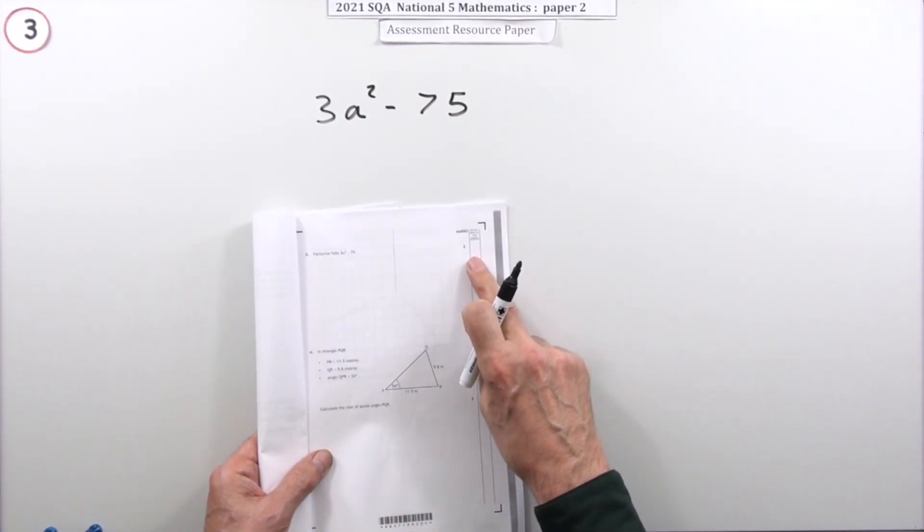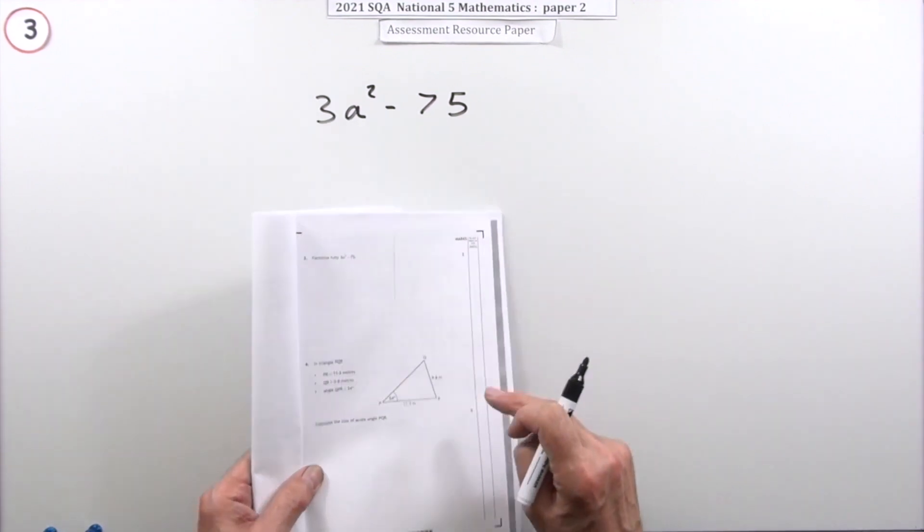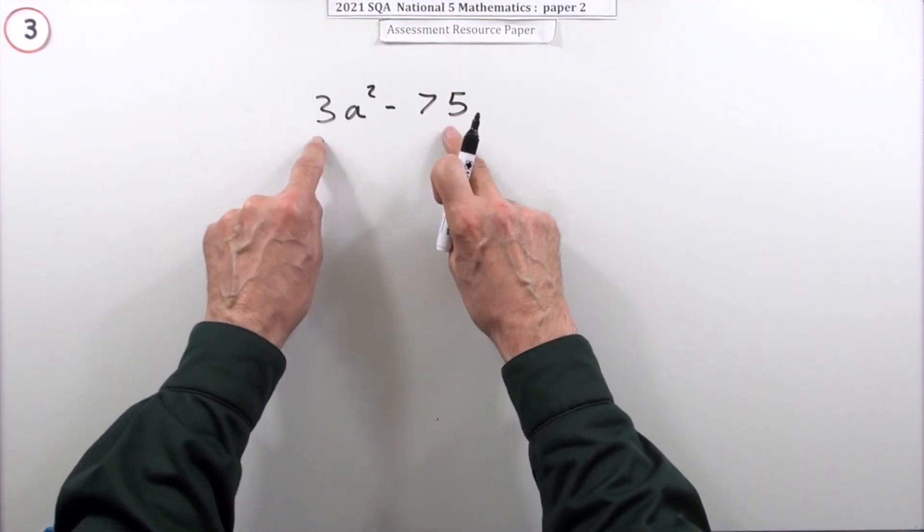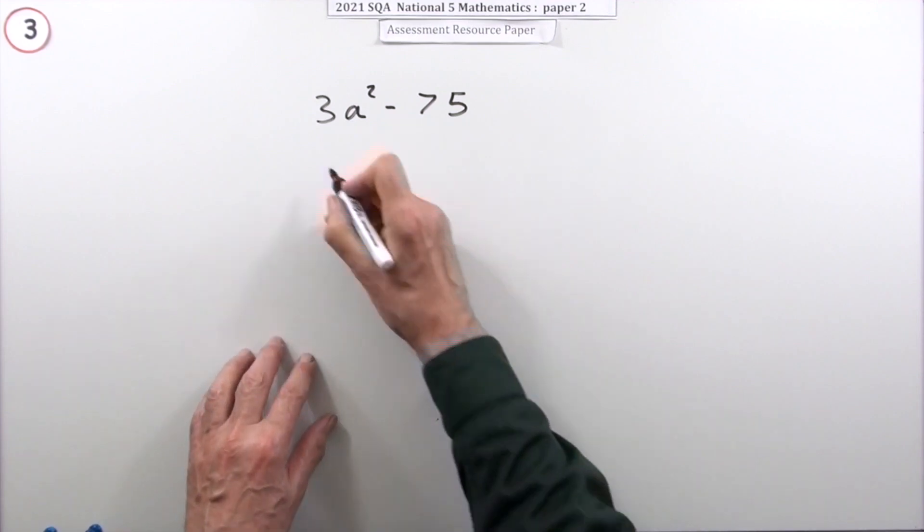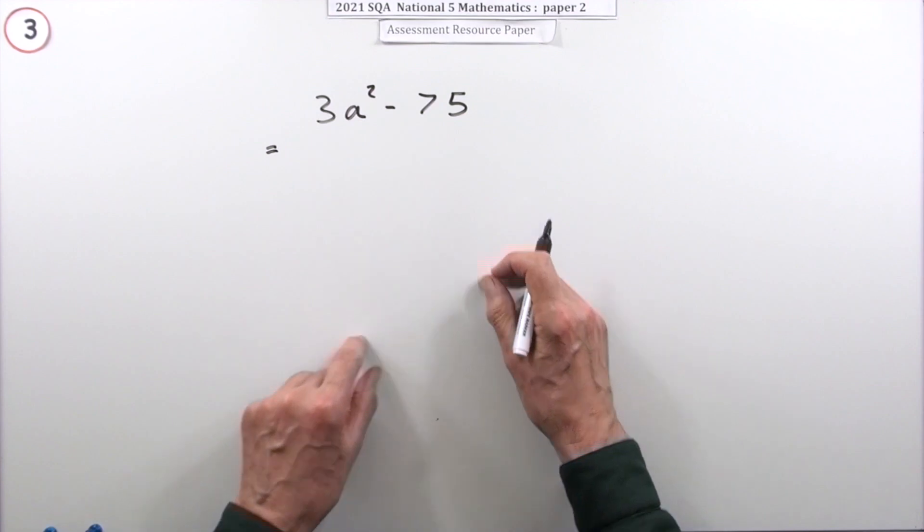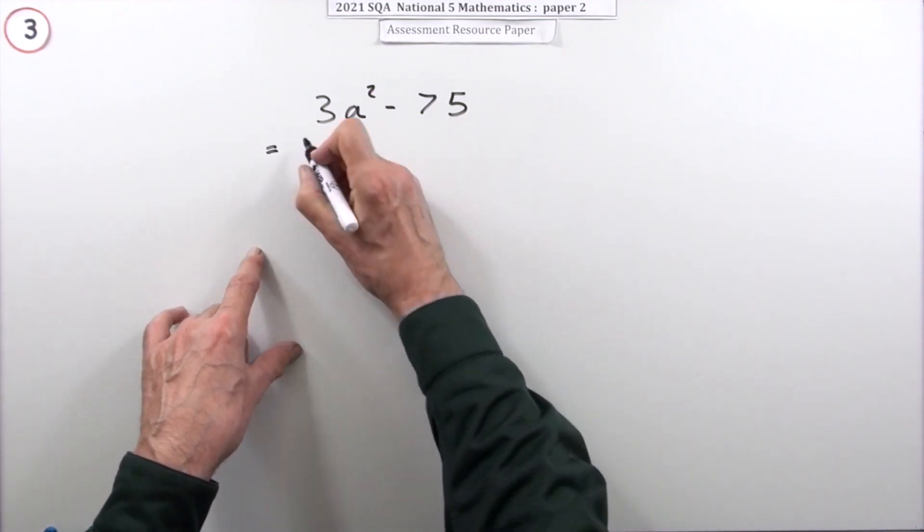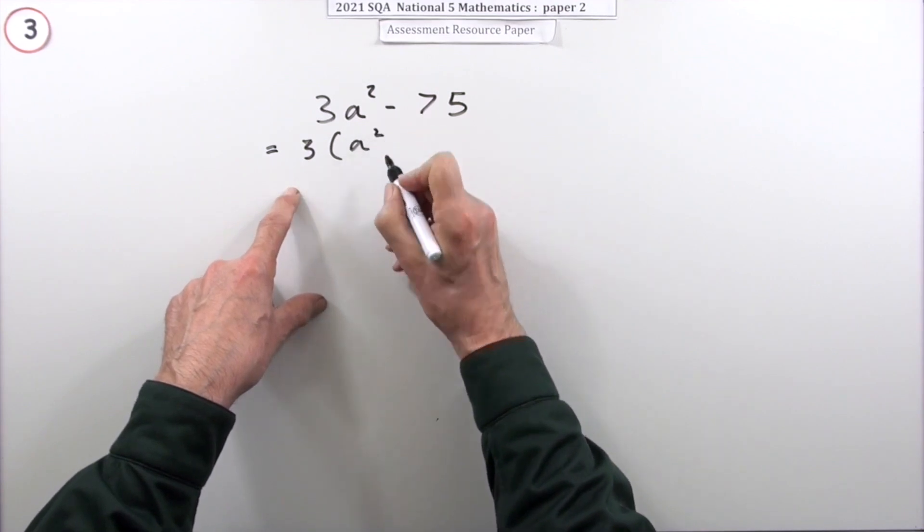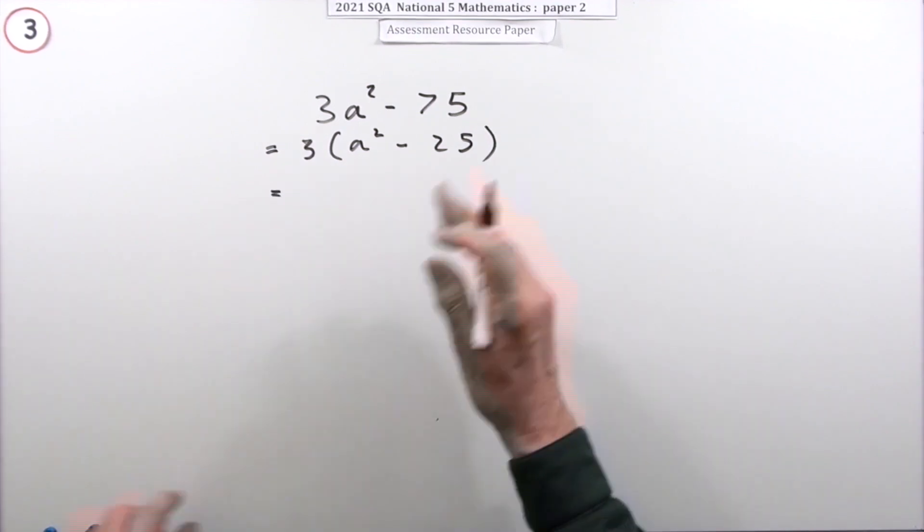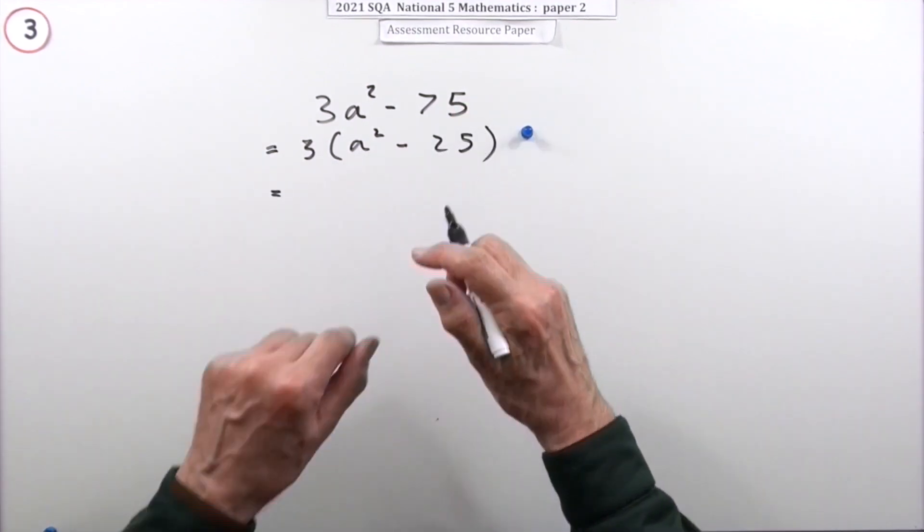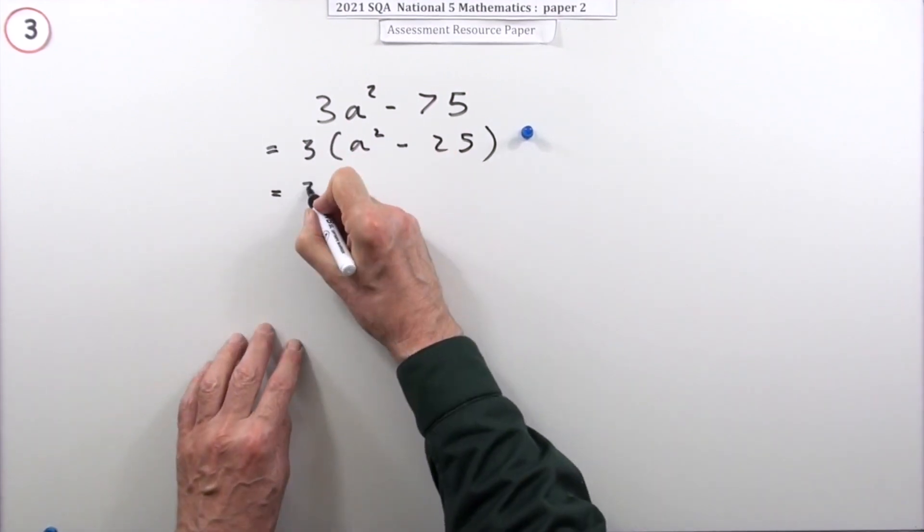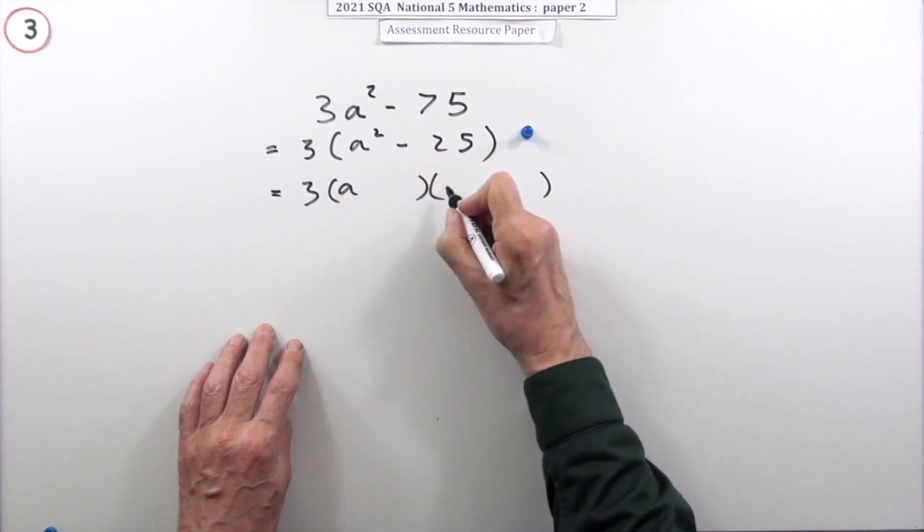Number three then, just for the two marks, fully factorize this little expression here. Well you look at that, it looks like the difference of two squares except they're not perfect squares are they? But that doesn't matter because the first thing you would do regardless is look for common factors. 3 goes into them both. 7 and 5 add up to 12, 3 goes into 12. 3 goes into them both, so take out the common factor of 3 and then worry about what you've got. So 3 into that's a²-25, and that's the first mark, take out the common factor.